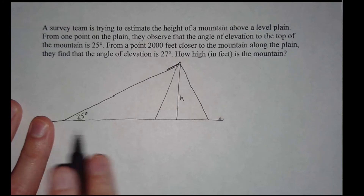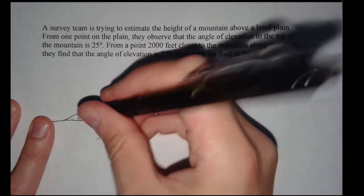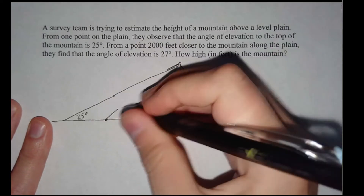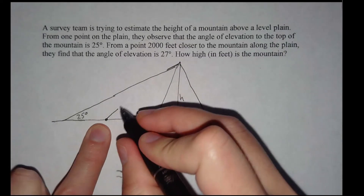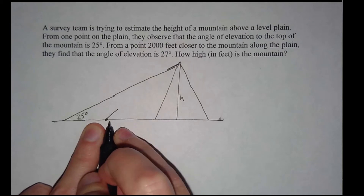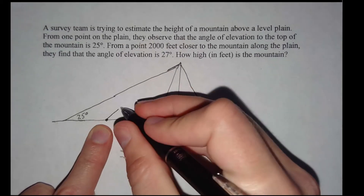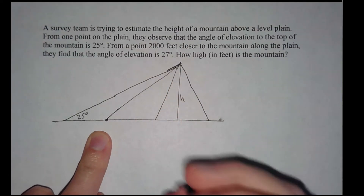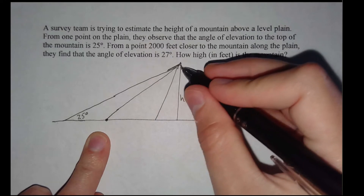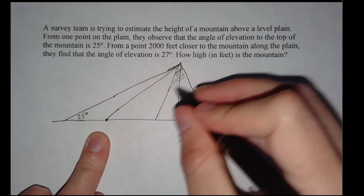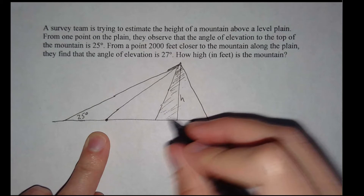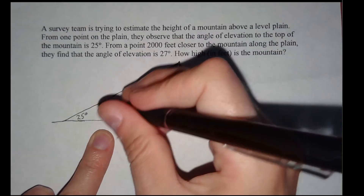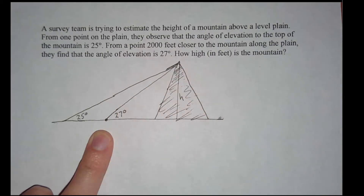Then they move 2,000 feet closer to the mountain. As we get closer, the angle of elevation will increase. Because if we're closer to the mountain — imagine you're tilting your head upwards — the closer you get, the further you'd have to tilt your head upwards to see the top. So the angle of elevation here is going to increase. From here, the angle of elevation is slightly larger: 27 degrees.